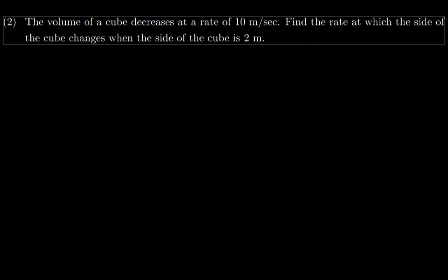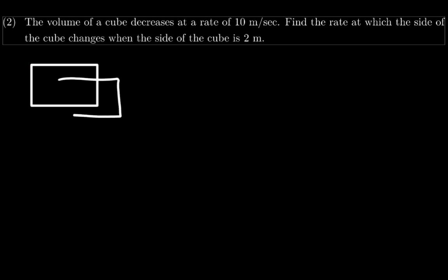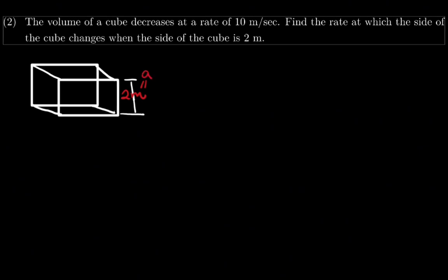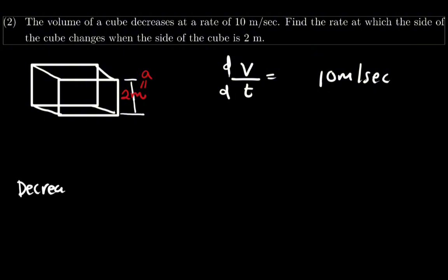Question number 2: the volume of a cube decreases at a rate of 10 meters per second. Find the rate at which the side of the cube changes when the side of the cube is 2 meters. We have a cube with a side of 2 meters, which we call A. The volume decreases at a rate of 10 meters per second.